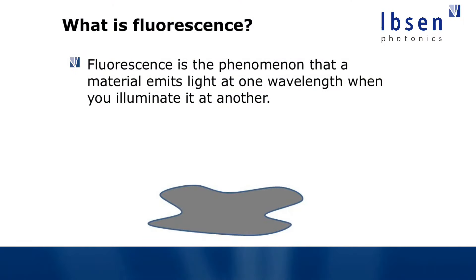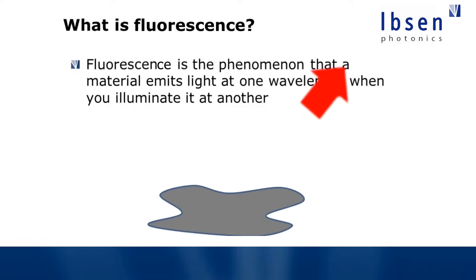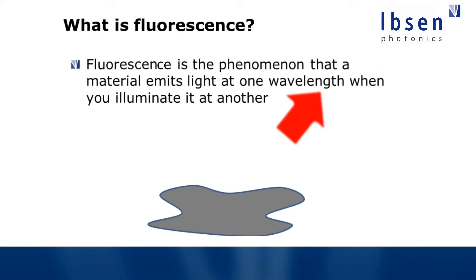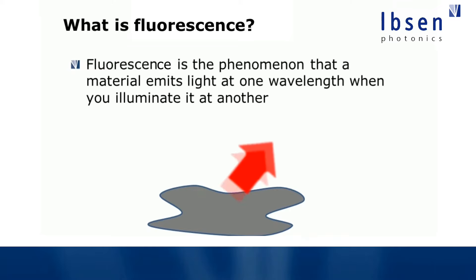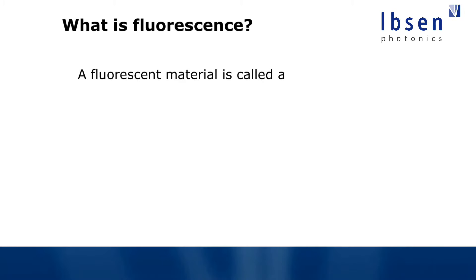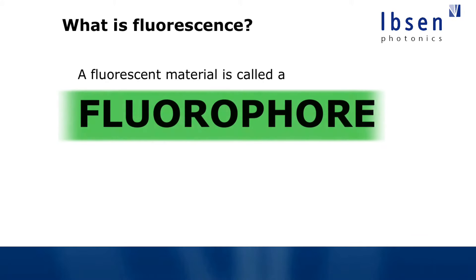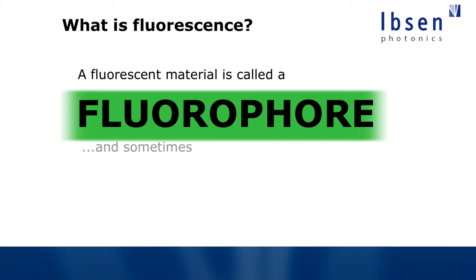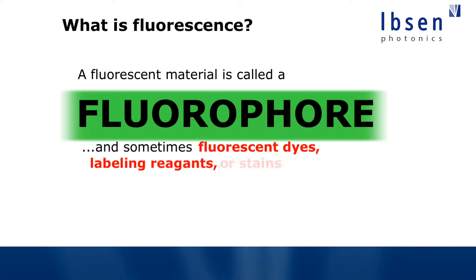Let's get started with the basics. This animation shows how fluorescence works: you send in light at one wavelength — illustrated by the green arrows — to the fluorophore, and the fluorophore emits light at another wavelength, illustrated by the red arrows. A material with this property is called a fluorophore, but you can also find them named as dyes, labels, or stains.